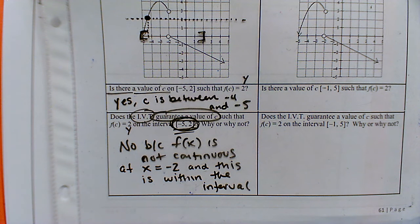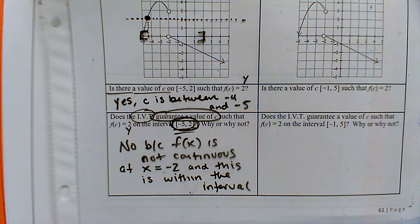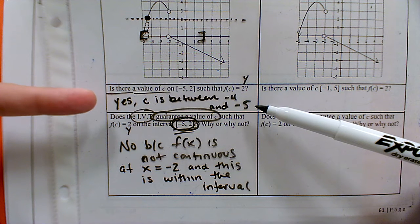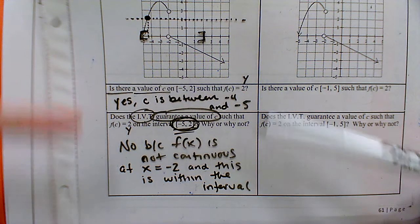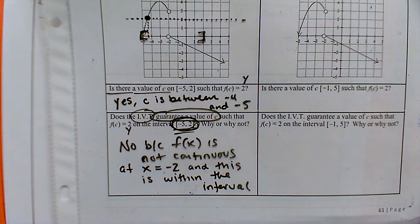The reason -2 is an issue is that it falls inside the interval we're analyzing. If a discontinuity were at x = 7, it wouldn't matter because we're only looking from -5 to 2. So even though a value for c visually exists on the graph, we are not guaranteed one by the theorem. There's a difference between a value existing and being guaranteed by the IVT.